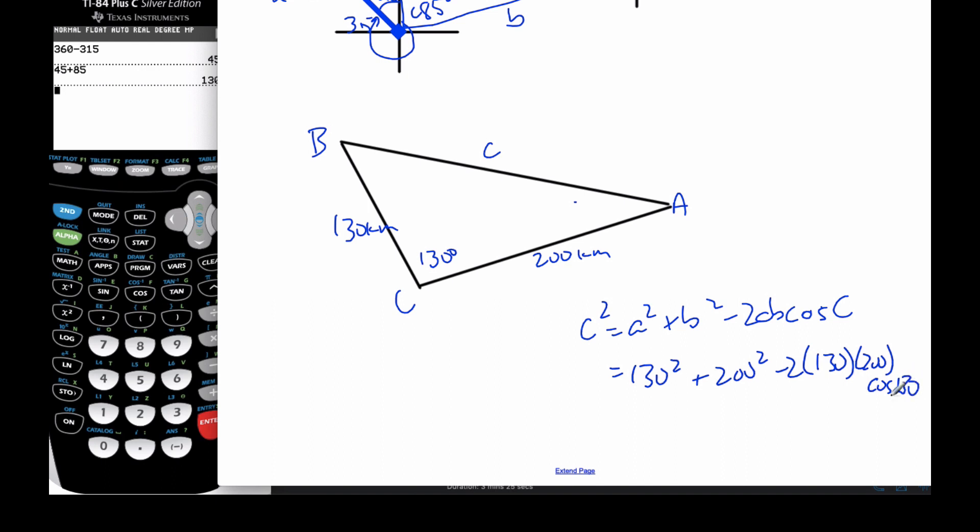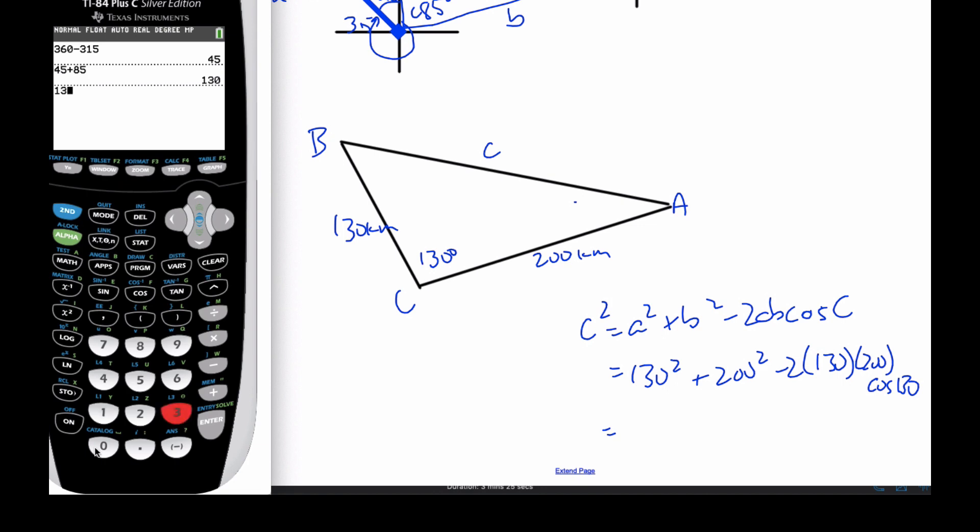And let's see what we get for a value. Plus 200 squared minus 2 times 130 times 200 times the cosine of 130 gives me 90324. And then I'm going to take the square root of that value, and then I'm going to actually store into alpha, it's c. I'll put alpha c.